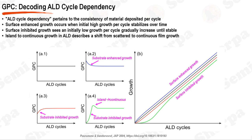In the case of surface-enhanced growth, the GPC is initially high during the early stages of the ALD process but decreases with successive cycles until it stabilizes. This can occur due to the initial high availability of reactive sites, which decreases as the film grows and the surface chemistry changes. Surface-inhibited growth, on the other hand, is characterized by a low initial GPC that gradually increases with each cycle until it reaches a steady state. This scenario can arise when the initial surface is not entirely conducive to the precursor surface reaction, but as the ALD film starts to form, the surface becomes progressively more reactive.